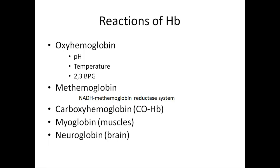Hemoglobin combines with various compounds. For example, hemoglobin combines with oxygen to form oxyhemoglobin. The formation of oxyhemoglobin depends on various factors. Whenever there is an increase in hydrogen ions or a decrease in pH — that is acidosis — there is a rightward shift of the hemoglobin-oxygen dissociation curve. Increased hydrogen ions or low pH will cause more dissociation of oxygen from hemoglobin. Increased pH or fewer hydrogen ions will result in formation of more oxyhemoglobin.